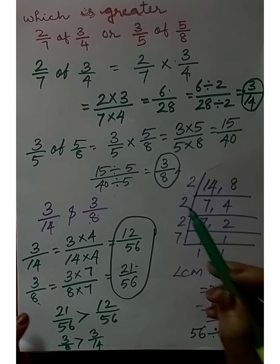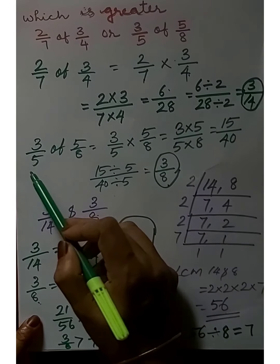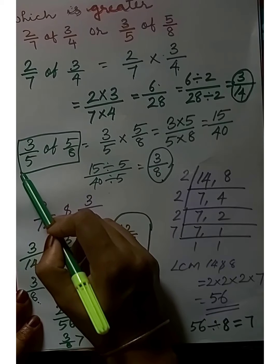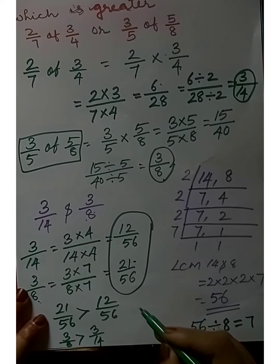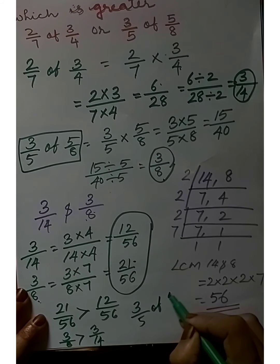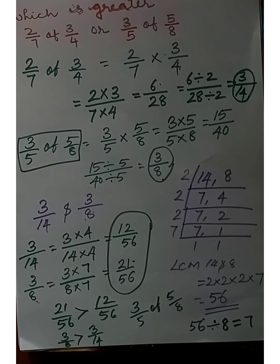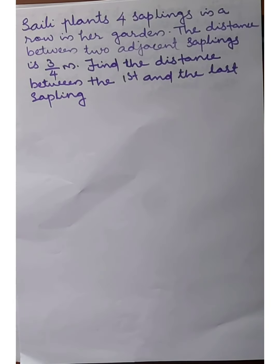So 3/8 is greater — which means 3/5 of 5/8 is greater than 2/7 of 3/4. Next question.